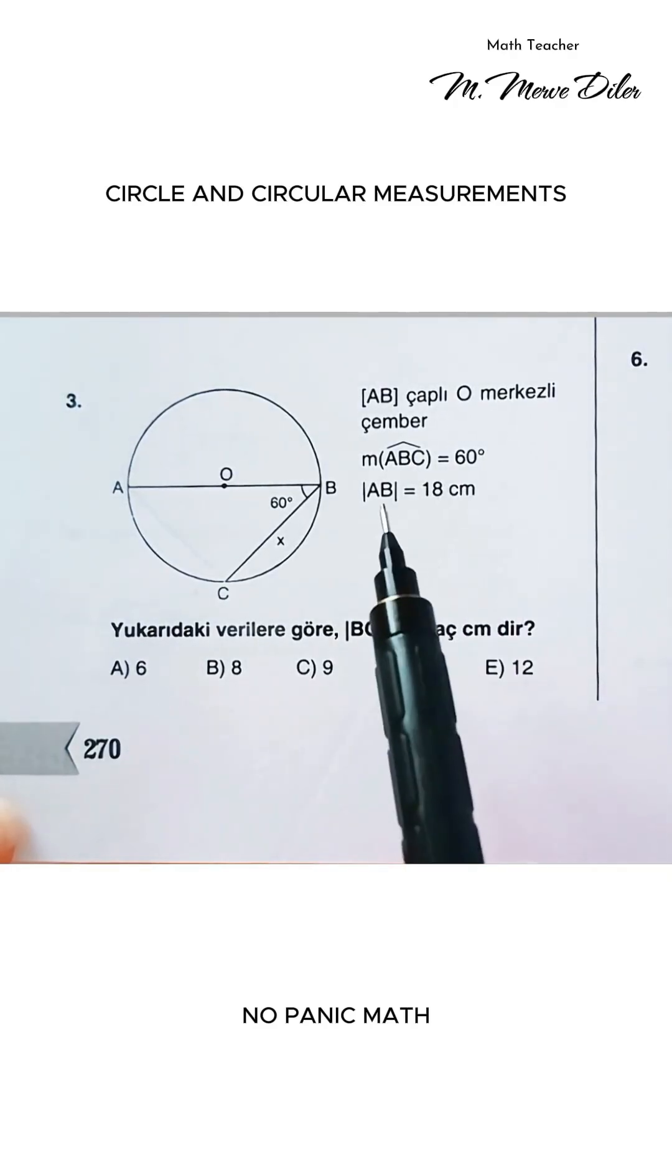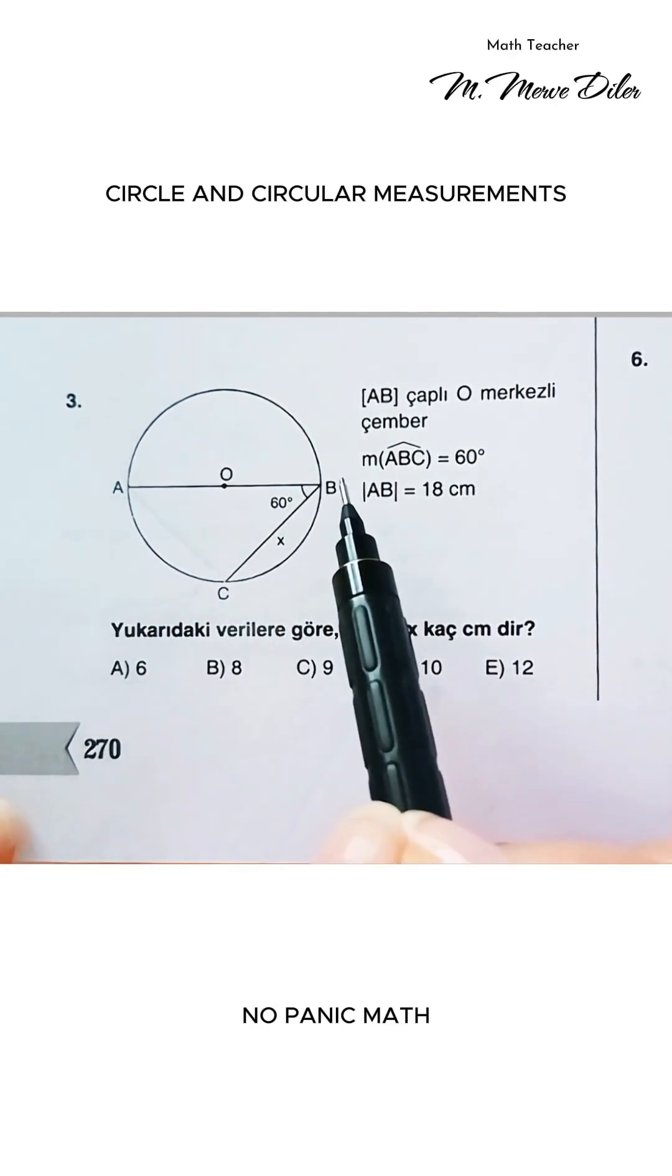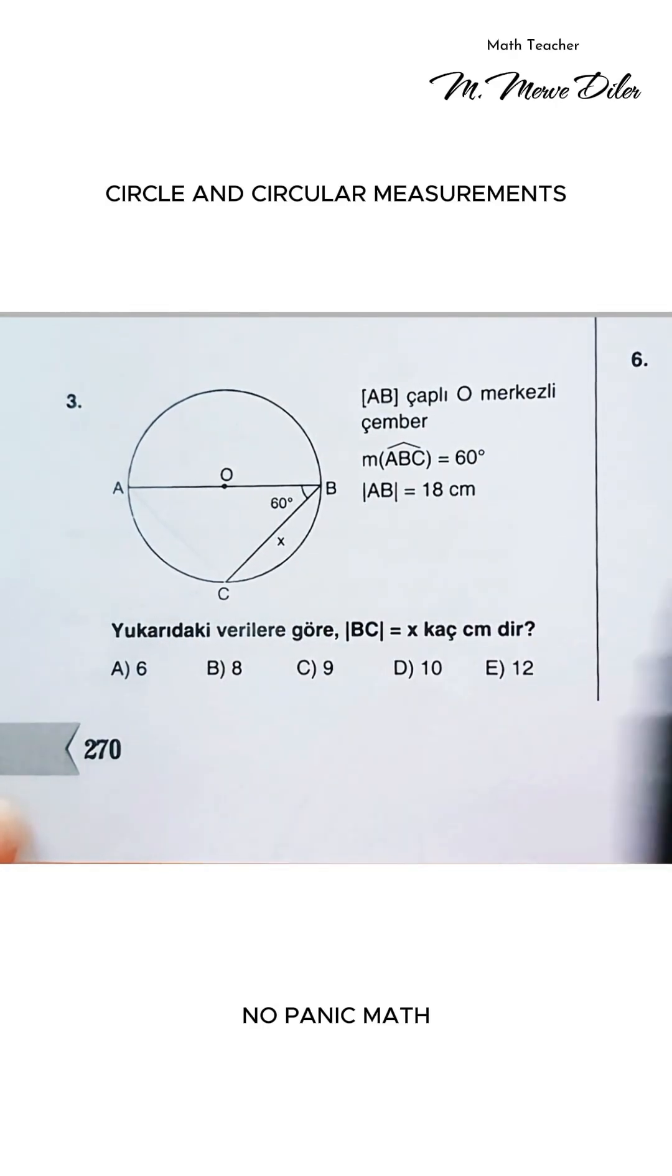A circle centered at O with diameter AB. Angle ABC is 60 degrees. The length of AB is 18 centimeters. They've asked us to find the length of BC.